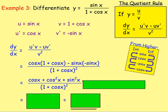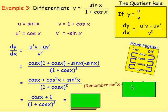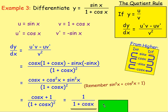From there, we use the identity sin²x + cos²x = 1. So we can write that as cos x plus 1 over (1 + cos x) all squared. cos x + 1 is the same as 1 + cos x, so we can cancel a (1 + cos x) from the top and bottom. That leaves 1 over 1 + cos x, and that is your answer.